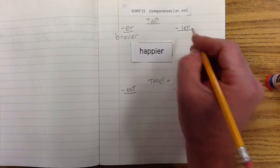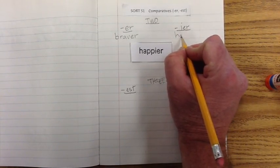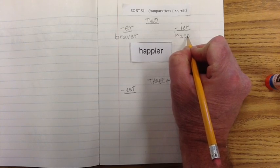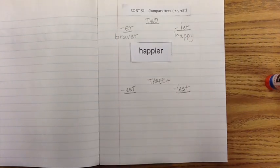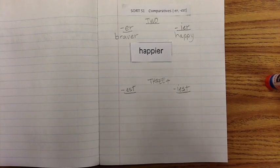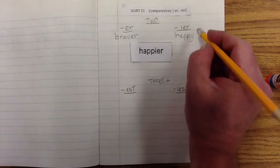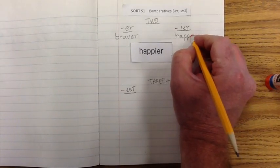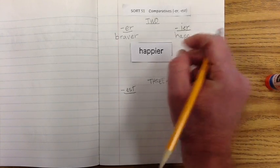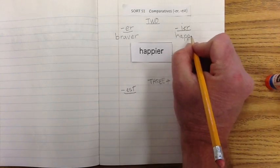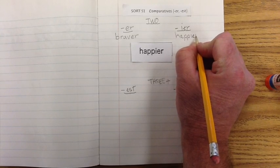All right. Here we have the word happier, and happier is H-A-P-P. I'm going to stop right there because the base word is happy, but it's happier. So, we need to remember that words that end in Y, we're going to drop the Y. So, we're going to get rid of that Y, right?